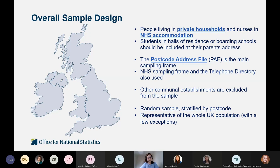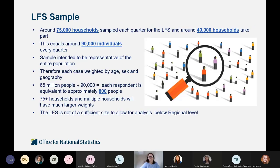The sample is a random sample stratified by postcode and is representative of the UK population, with a few exceptions — basically because we only include NHS accommodation as a communal establishment. The LFS sample covers around 75,000 issued addresses, and around 40,000 households take part every quarter, equalling around 90,000 individuals. When we look at the overall UK population, each respondent represents about 800 people.